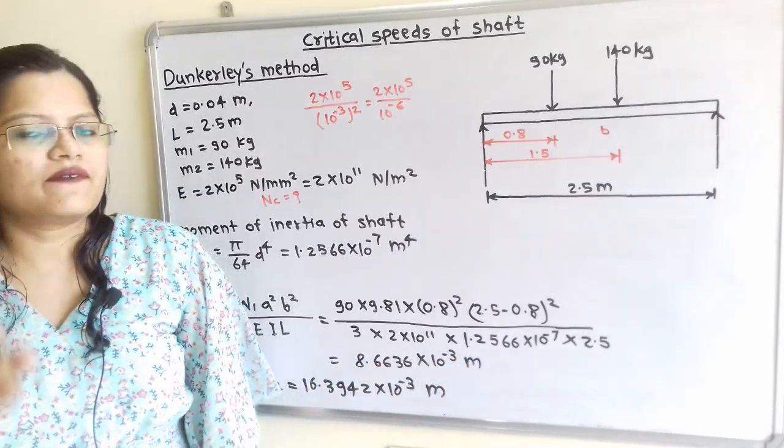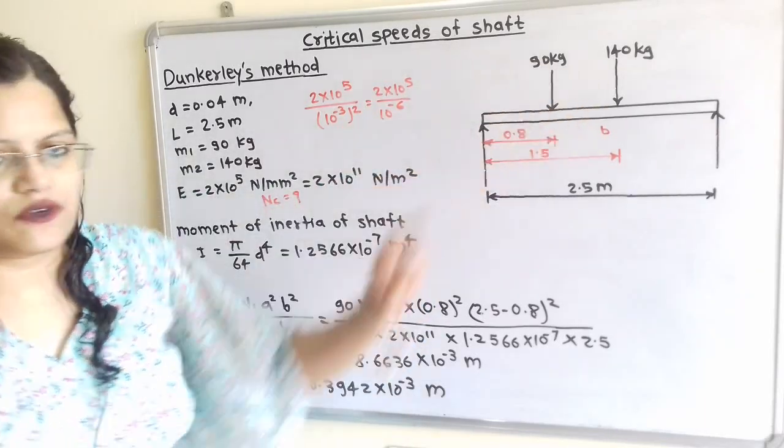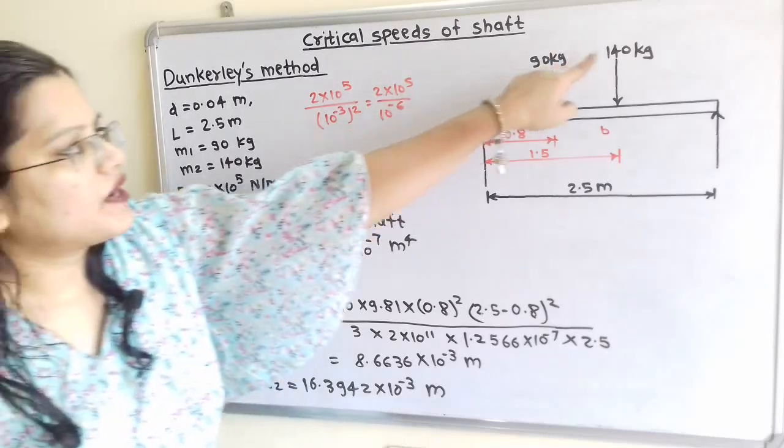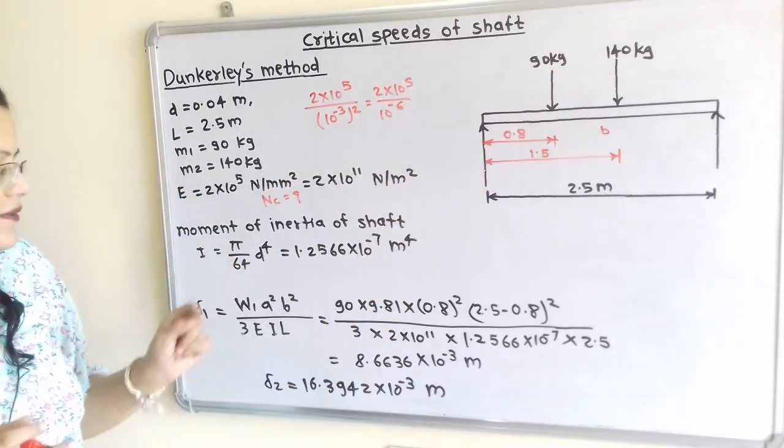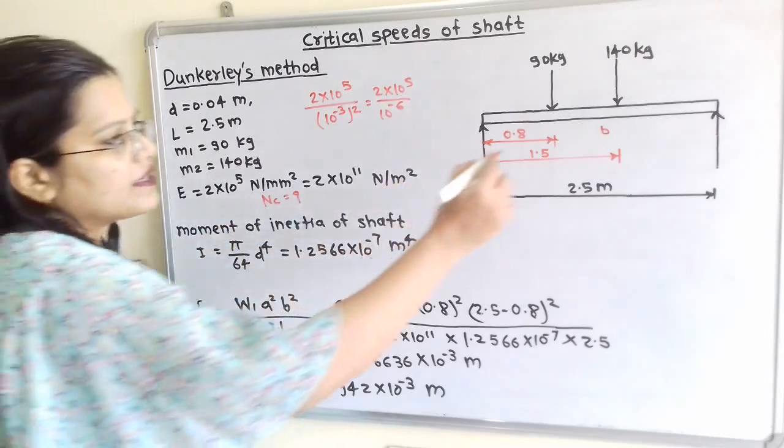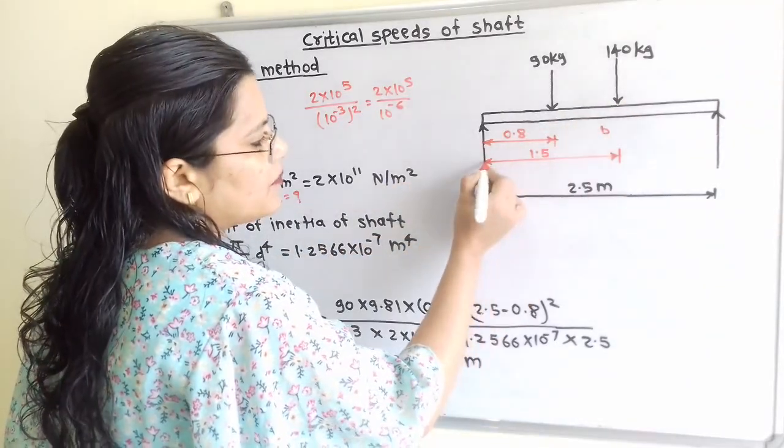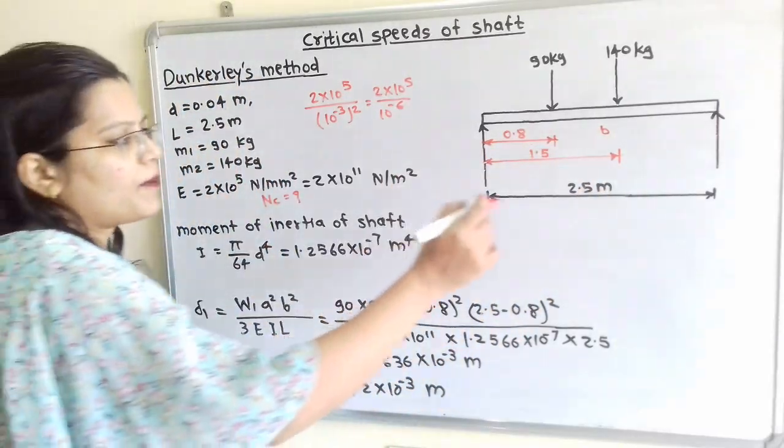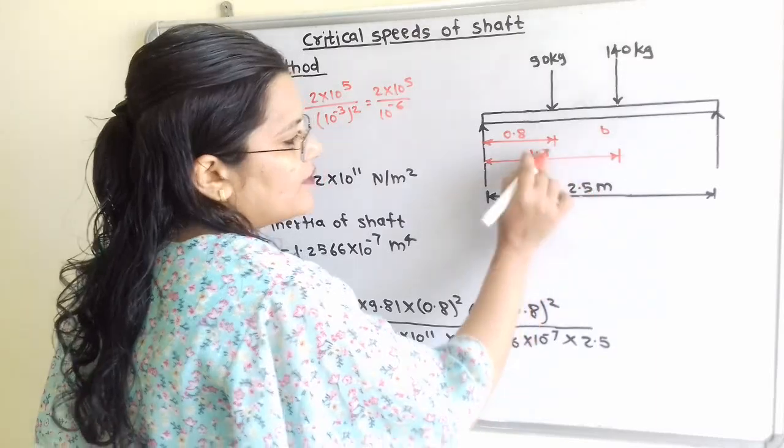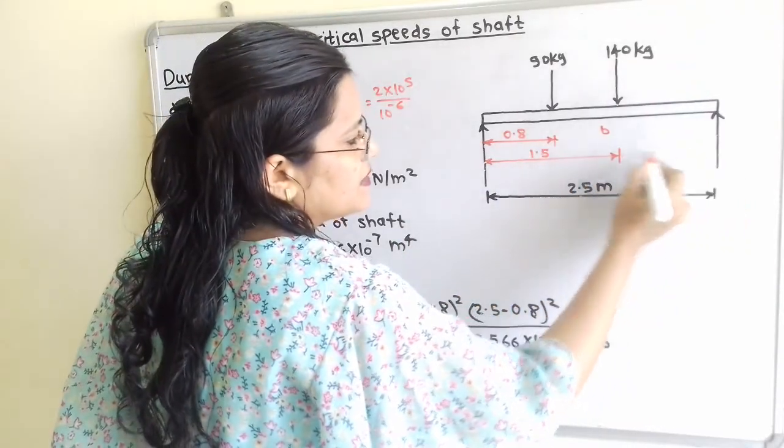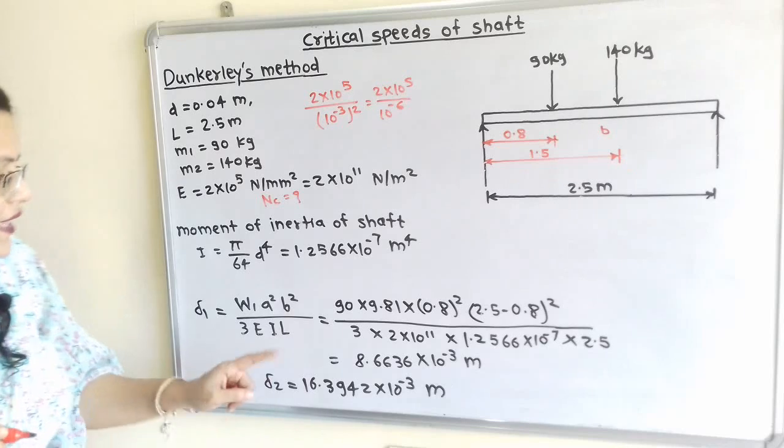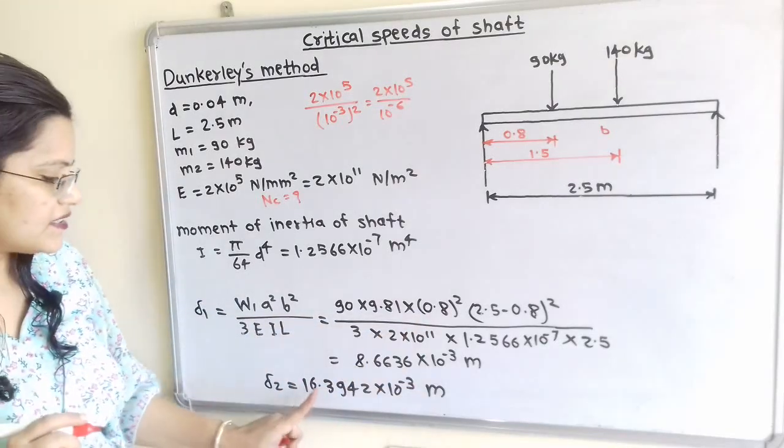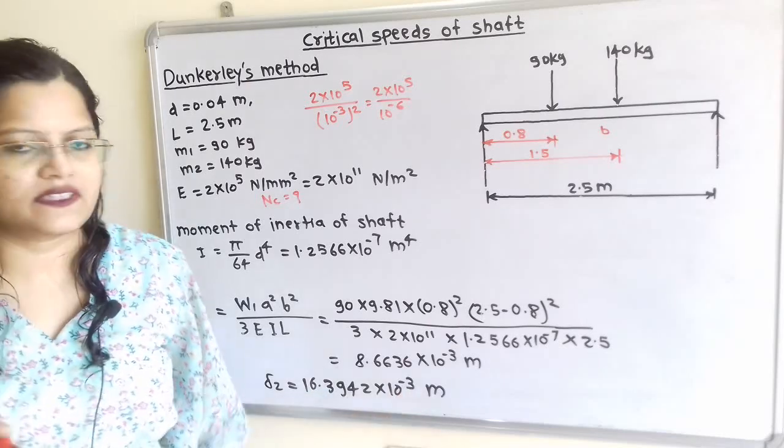Now in the same way we will calculate the deflection due to second point load. So here instead of W1 we have to take W2 that is 140 into 9.81. Now what is the value of A? So here the distance of this point load from left hand side is 1.5. So value of A is 1.5 and value of B is 2.5 minus 1.5 that is here is remaining distance 1 meter. Then all the other values are same and when we calculate we will get 16.3942 into 10 raised to minus 3 meter.